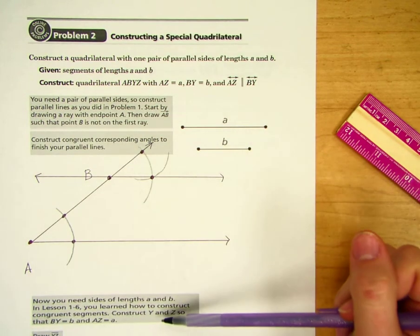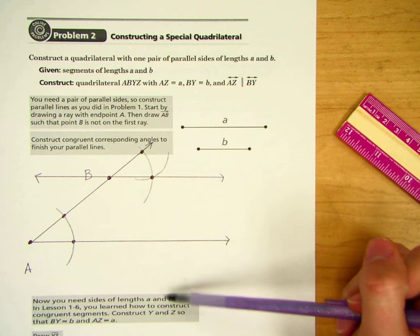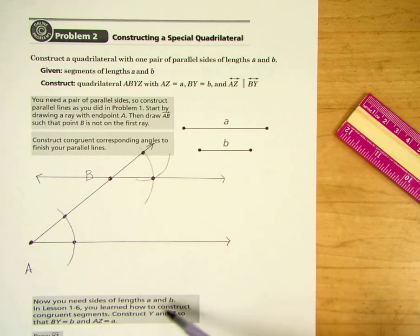Now you need sides of lengths A and B. In lesson 1-6, you learned how to construct congruent segments. Construct Y and Z so that BY equals B and AZ equals A.